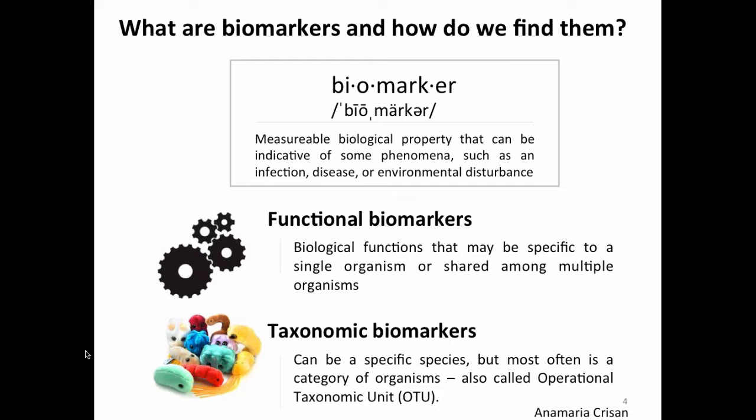So what are biomarkers and how do we find them? A biomarker is a measurable biological property that can be associated with a particular phenomenon or sample — such as an individual with an infection or disease, or an environmental indicator of pollution or some environmental phenomenon.